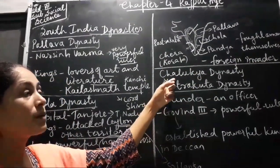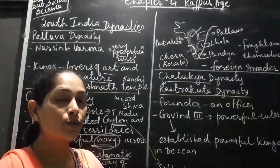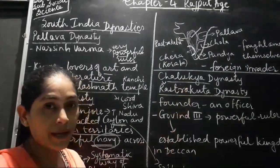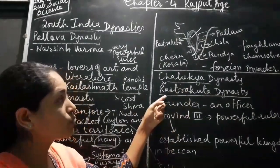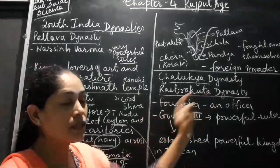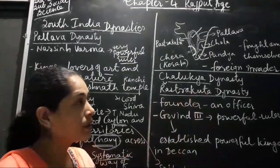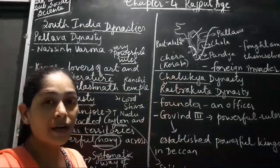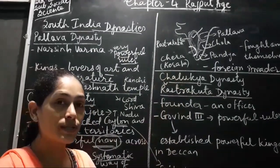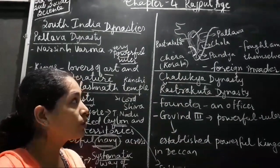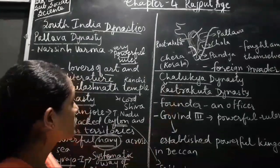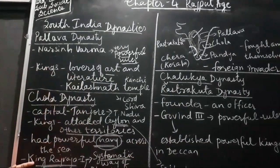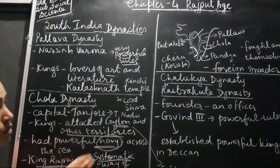Let us learn about the Rastrakuta dynasty. After the fall of the Chalukya dynasty, the Rastrakuta dynasty came to power. Chalukya dynasty — we had learned that Pulkeshi II belonged to the Chalukya dynasty, and then we had this dynasty coming up.